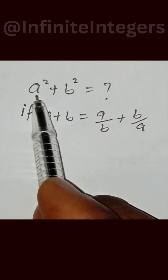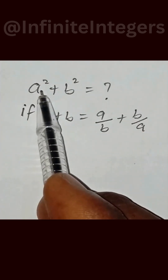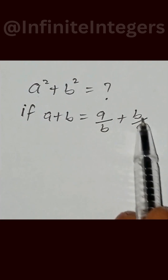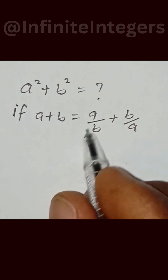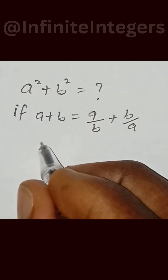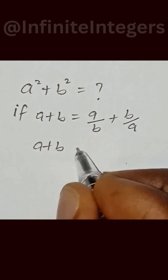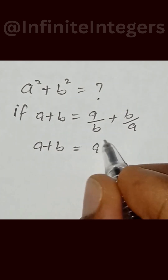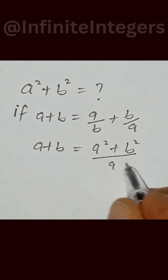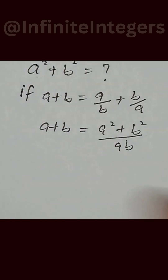We want to find the value of a squared plus b squared, if a plus b equals a over b plus b over a. First, we simplify the right-hand side: a plus b equals a squared plus b squared over ab.